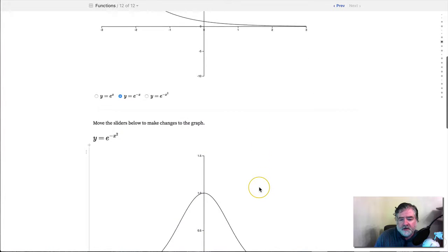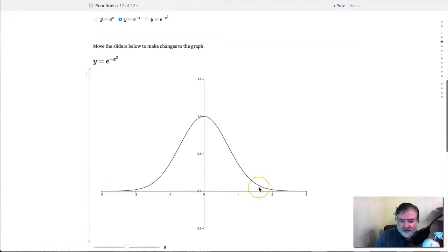Down here, I zero in on the bell-shaped curve because it's so important in statistics.